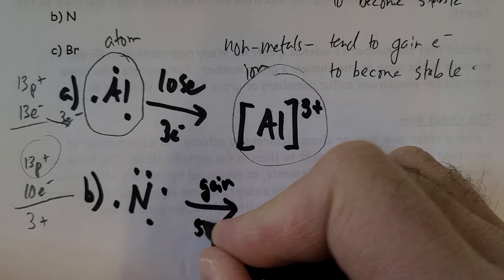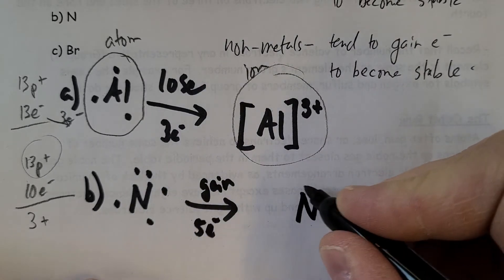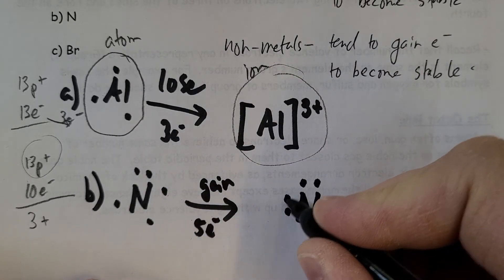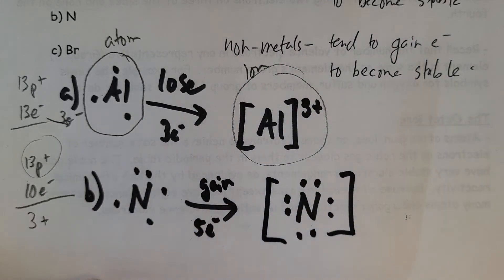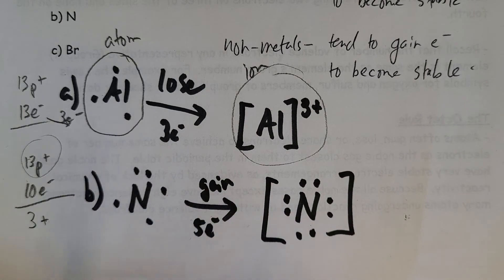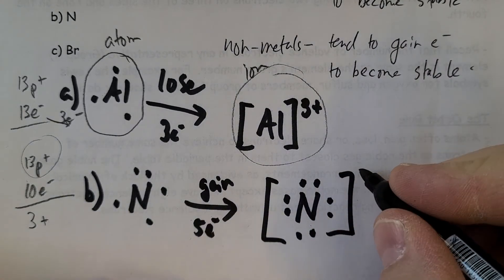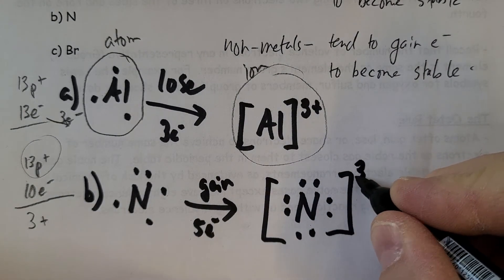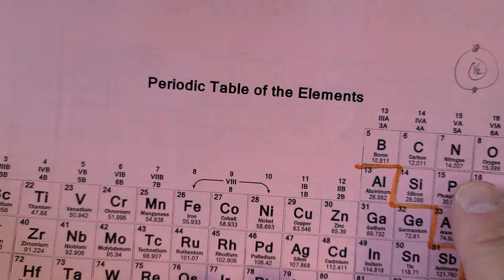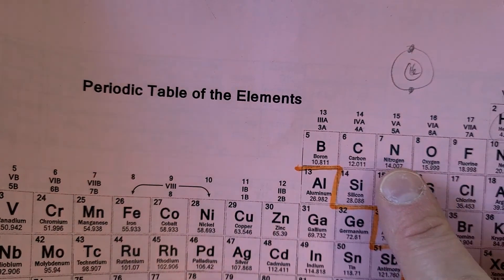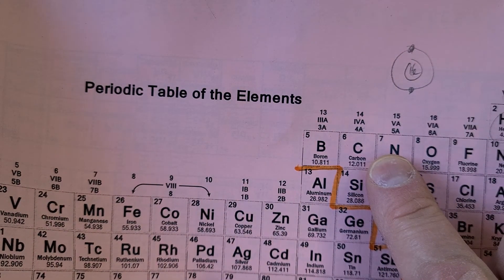Gain three electrons. So it'll gain three electrons, and what will happen is that it will then become full in its current level. And because it gained three, it's going to have three negatives that are unbalanced.